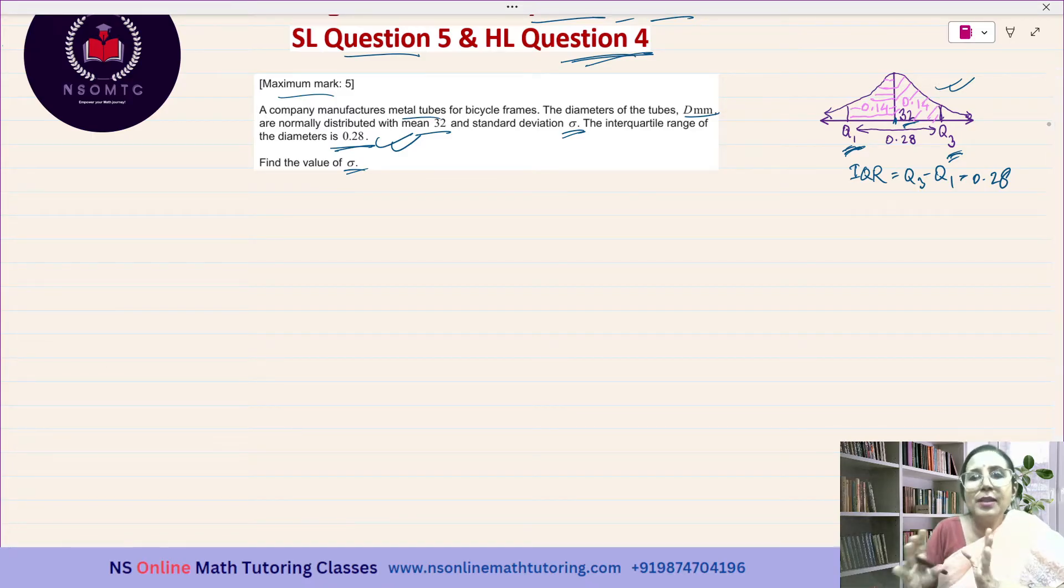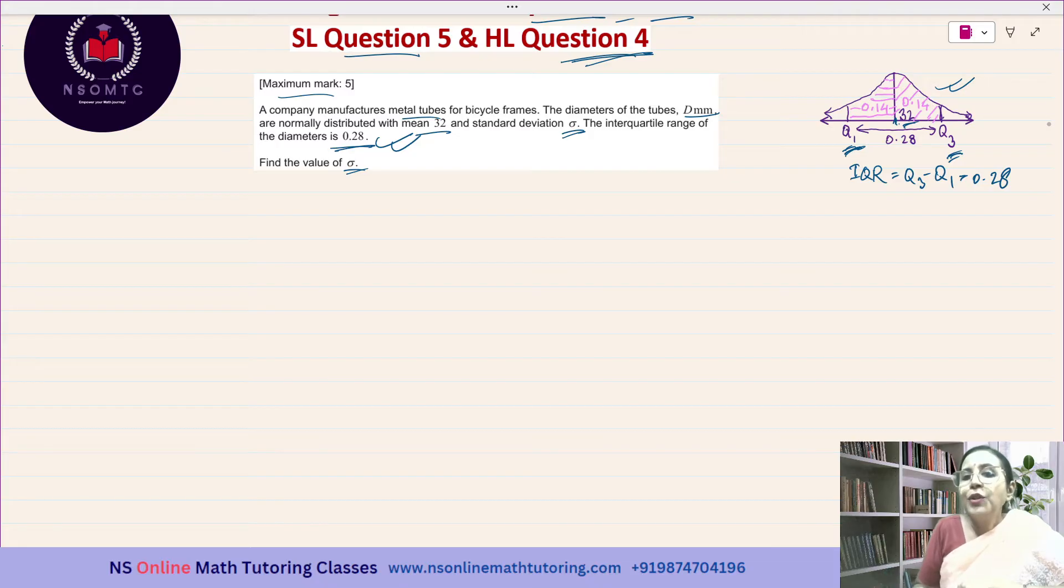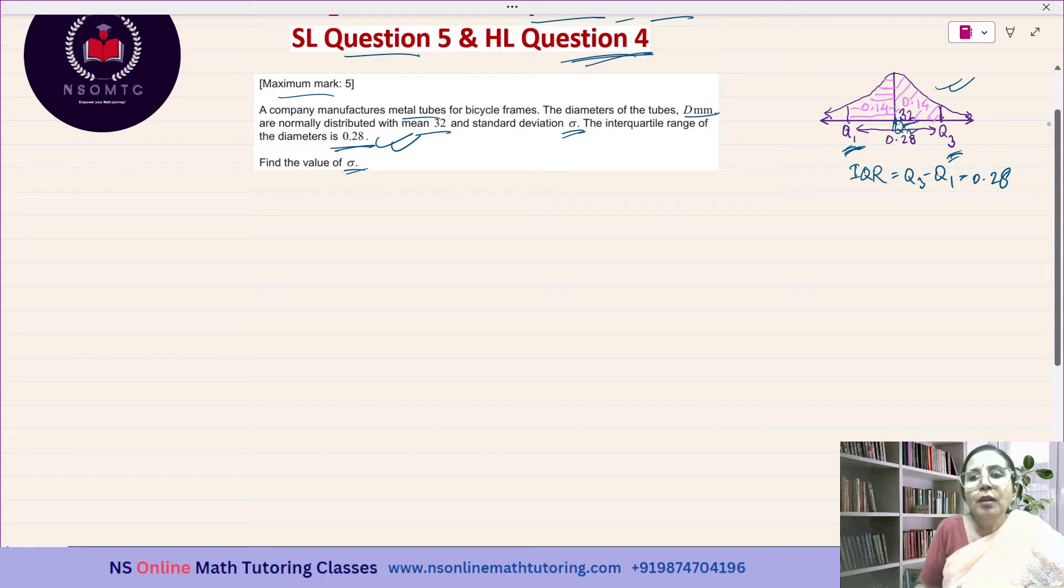Since the normal distribution curve is symmetrical about the mean, the mean equals the median equals the mode. The median is also 32. Because it is symmetrical, the portion between Q1 and Q2 will equal the portion between Q2 and Q3. So we can divide 0.28 by 2, getting 0.14 for each portion.